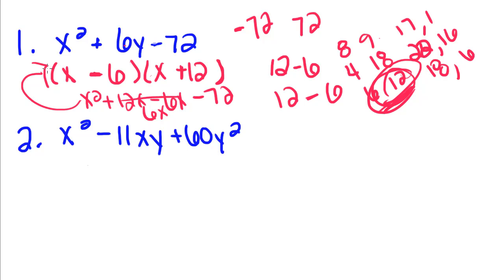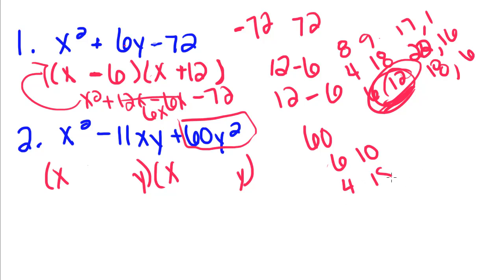We have one more example that we're going to do. So what two numbers multiply to get 60? The first thing we can write down is we know that these first two numbers are going to be x and x, and that these numbers on the ends are going to have to have y's in them because this is 60y squared. So 6 and 10 multiply to get 60, 4 and 15.